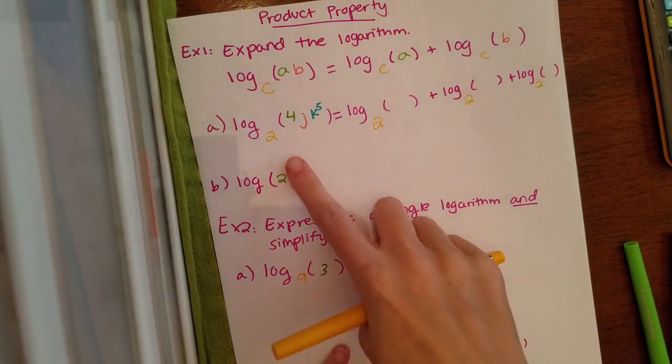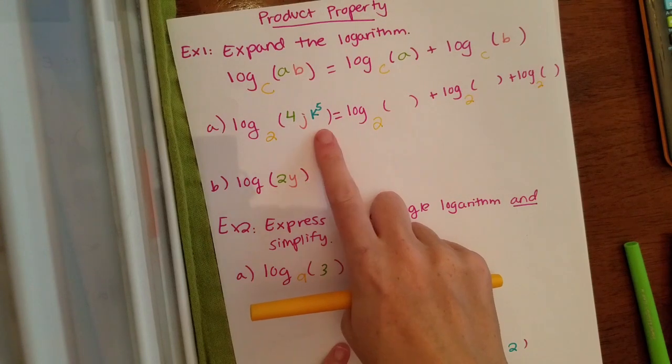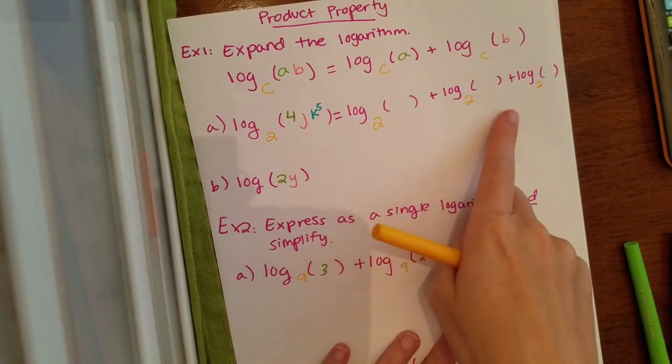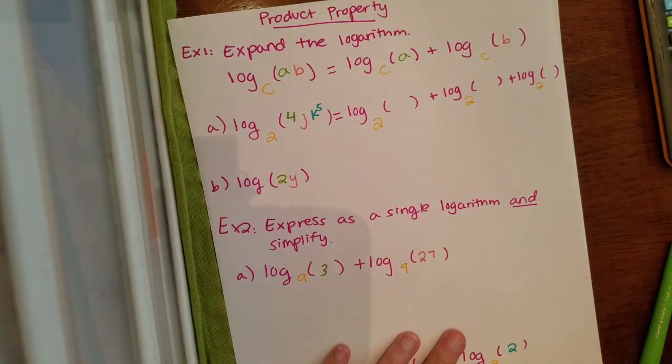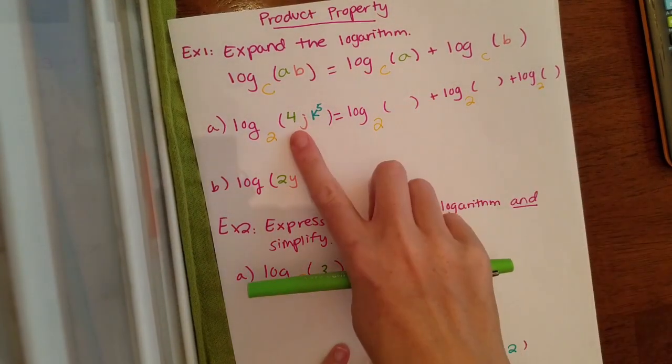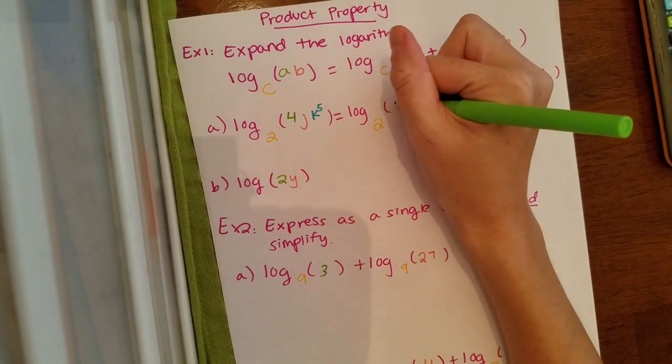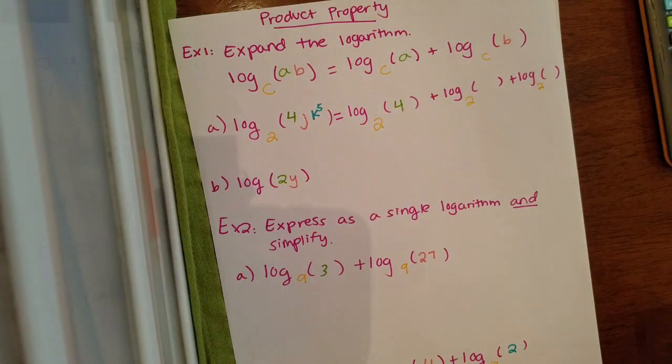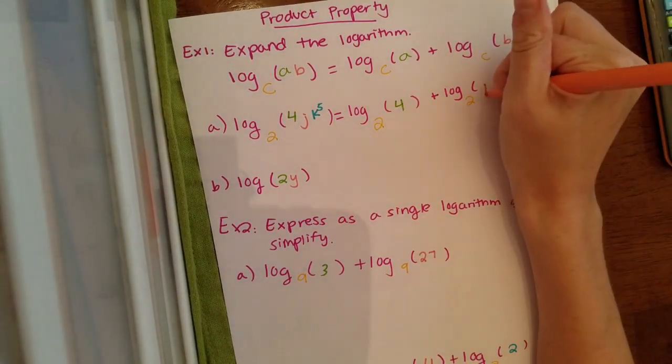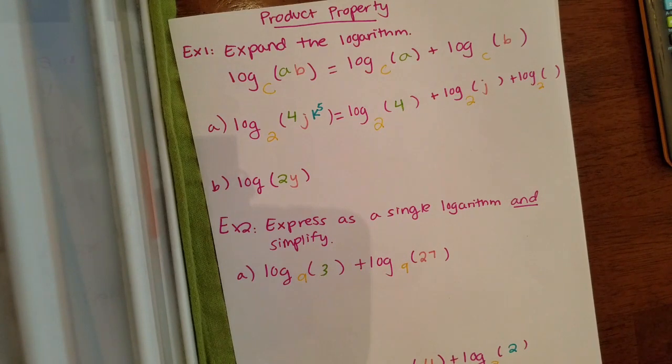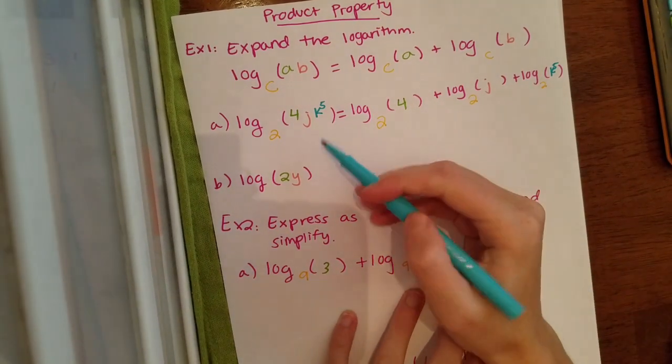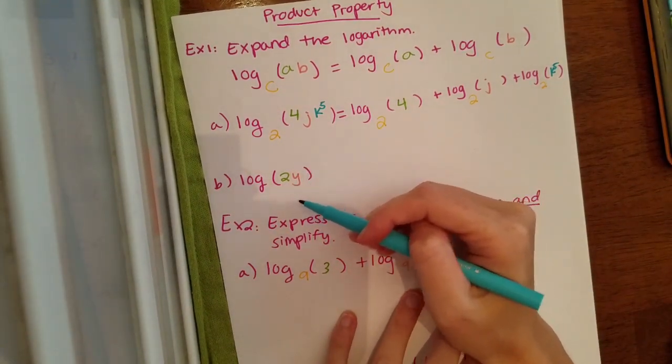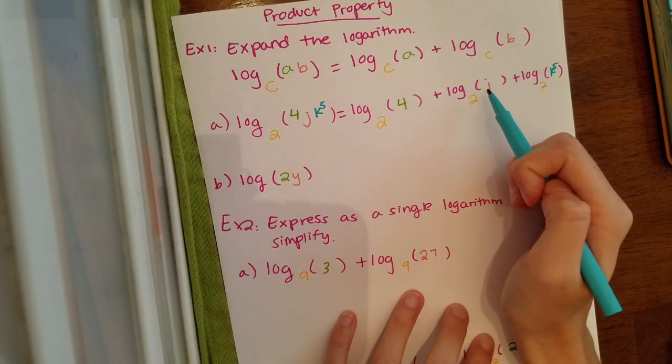And then after this, you guys, you just place each one of these pieces that are multiplying in their own log. They had fun together, but now they want to be on their own, have some alone time. So I'm going to write the four in my first log, the j in the second log, and the k to the fifth in the third log. And that will be it, you guys. Don't overthink it. So again, multiplication within the log, you separate by addition signs.